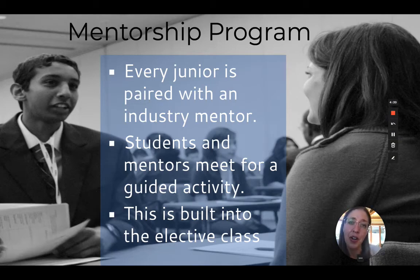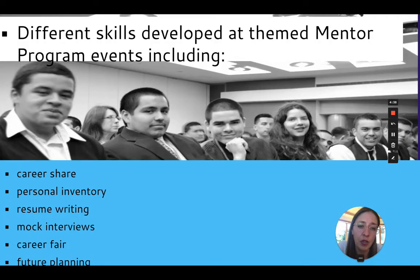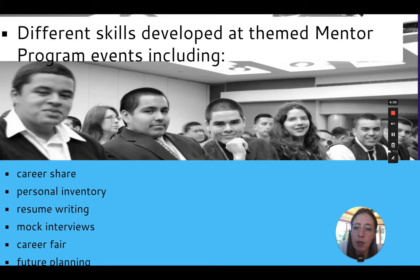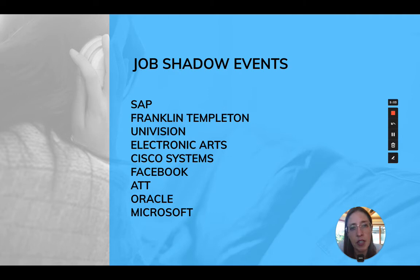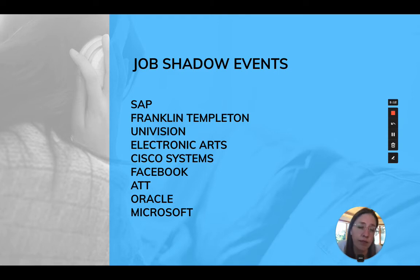Junior year, students are part of a mentorship program where they are paired individually with an industry mentor that is a good match for each student. There are guided activities built into the elective course that include career research, exposure to a broad range of careers through the career share, a personal inventory where students learn more about their strengths and areas of growth, resume writing, mock interviews, and future planning and goal setting. We also provide a lot of exposure through job shadow events where we visit different types of companies, as listed on the screen, and students learn about the types of roles they can have in these local successful businesses.